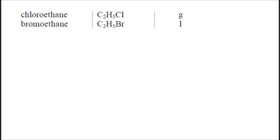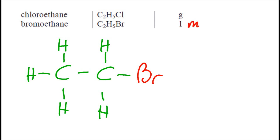Let's look at chloroethane and bromoethane. Now, chloroethane seems to be a gas, and bromoethane is a liquid. So chloroethane is more volatile. So why is bromoethane a liquid? It's got more electrons. It's got more van der Waals.